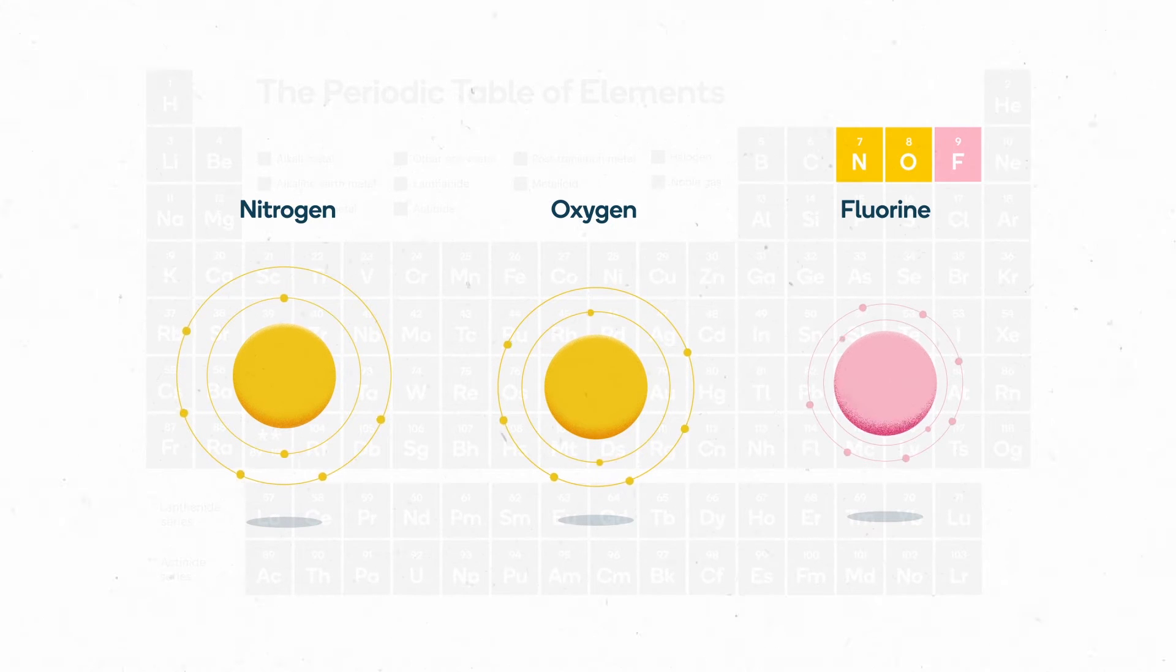With each step to the right, another electron is added to the valence shell. Nitrogen has 5, oxygen has 6, and fluorine has 7.